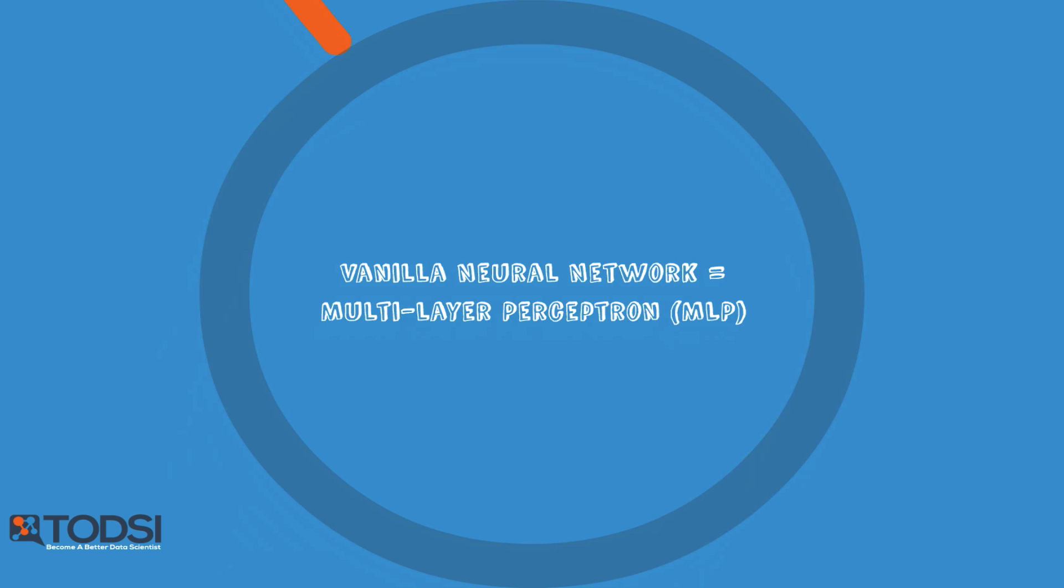As a result, this new breed of neural nets was called a multi-layer perceptron, or MLP. Since then, the nodes inside neural nets have replaced perceptrons with more powerful classifiers, but the name MLP has stuck.